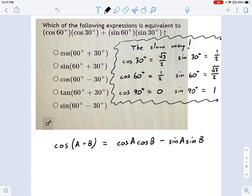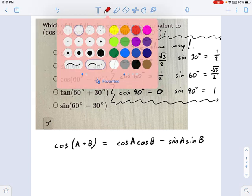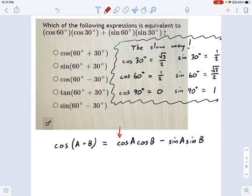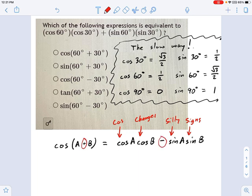You can think of this as, and I'm going to listen to the words I'm saying here, cosines change silly sines. Cosine changes silly sines. And what I mean by that, cosine changes the silly sign. For one thing, it tells you cos, cos, sine, sine. For another thing, it tells you take that plus sign and turn it into a minus sign.